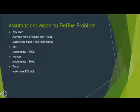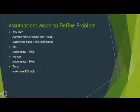Assumptions made to define the problem. For the yew tree, our average mass for a single leaf was 0.1g, and the model tree holds 1 million leaves. For the rat, the model mass was 200g. Our model human was 80kg. And for the extraction of Taxol, we assumed a maximum yield of 80%.